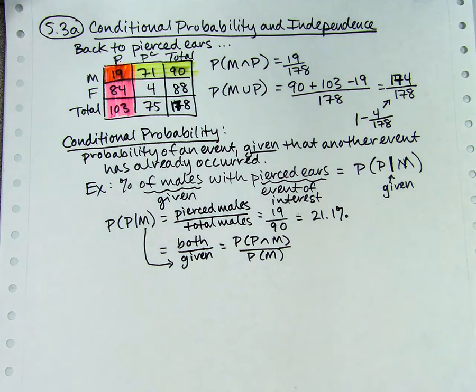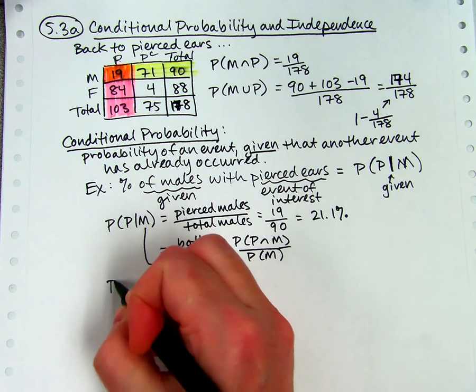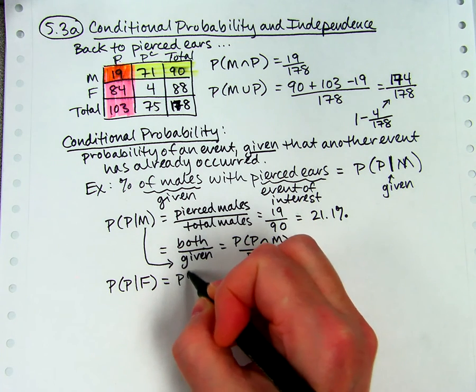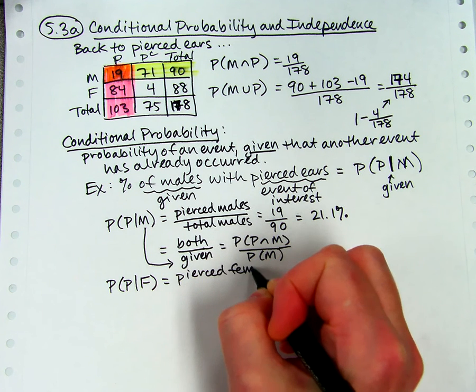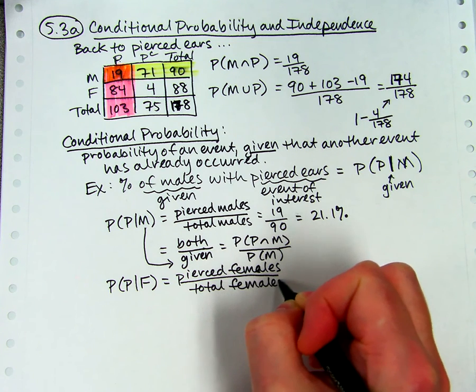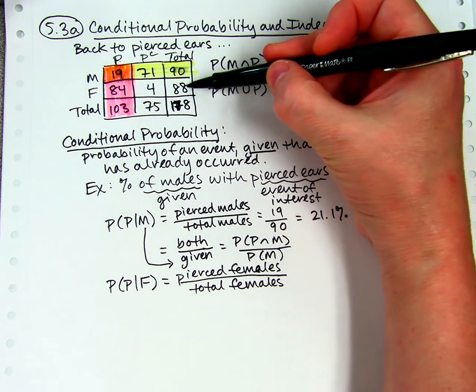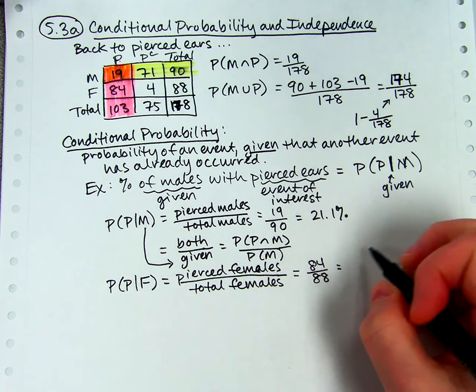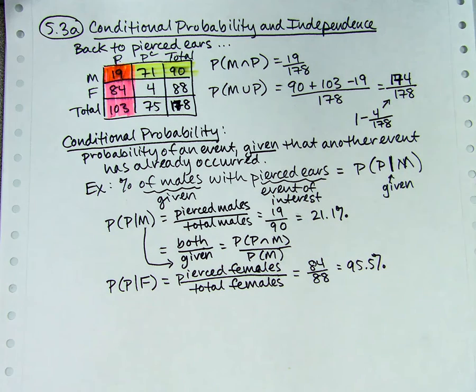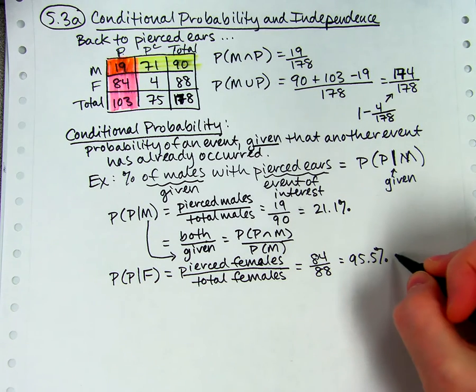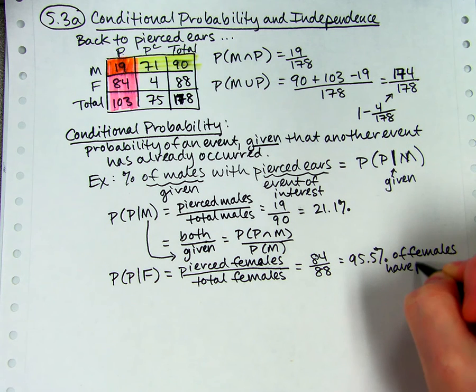Now, of course, we could do that with females also. We could do the probability of pierced given female or pierced given not male. That would be the same thing. It would be the pierced females, females with fierce ears, divided by the total females. Now we're focusing on the second row instead of the first row of this table. That's 84 out of 88, which is 95.5%. A lot more women pierce their ears than men. They are more likely to have pierced ears. You could write this in words by saying 95.5% of females have pierced ears.